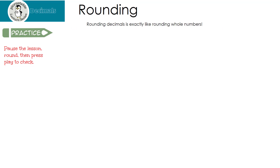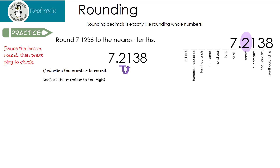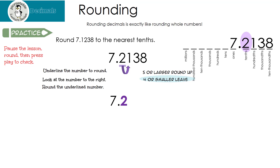Here's one for you to try. You're going to pause the lesson, round, then press play to check. Let's look at this one together. The first thing I like to do is rewrite my number. If you're not really good at this yet, you can use the place value chart, but remember, you need to memorize it. The question asks to round to the nearest tenths place. Which number is that? It's the two. So I need to underline the two because that's the number I'm going to round. I look to the number to the right — I'm looking at the number one. One is four or smaller, so we're going to leave the underlined number alone — we're going to leave it at a two. The answer is seven and two tenths. Notice that I took everything out after the two.